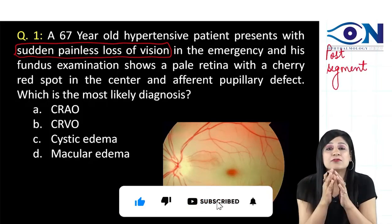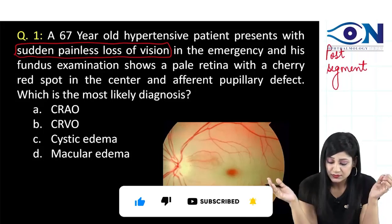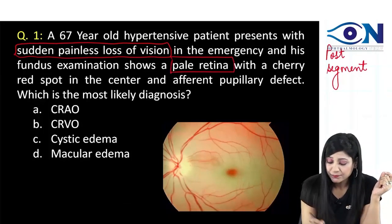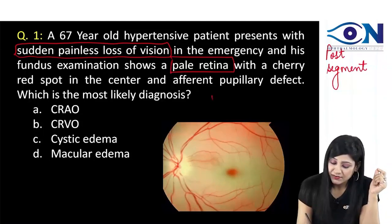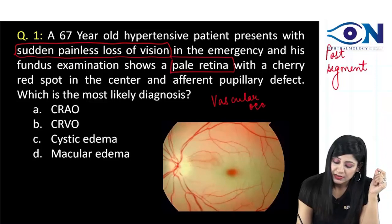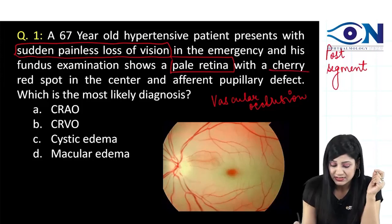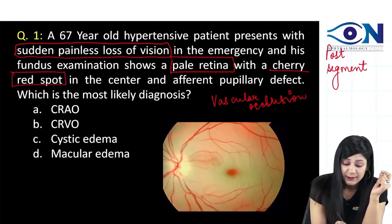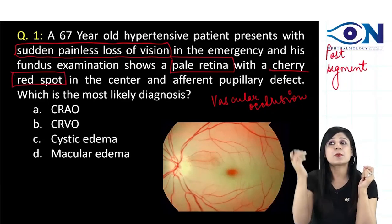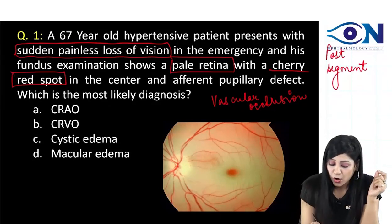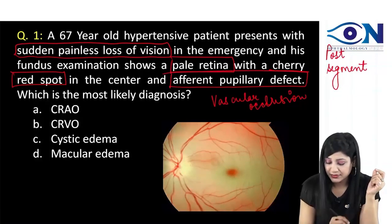We are filtering out the different options. His fundus examination shows a pale retina. If it is a pale retina, that means we can have vascular occlusion. On top of that, they are saying there is a cherry red spot. That makes the question very simple and straightforward, along with the afferent pupillary defect.